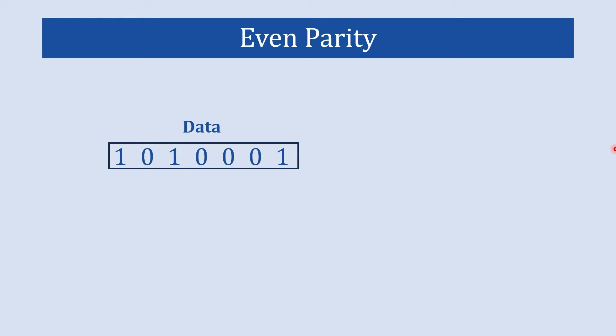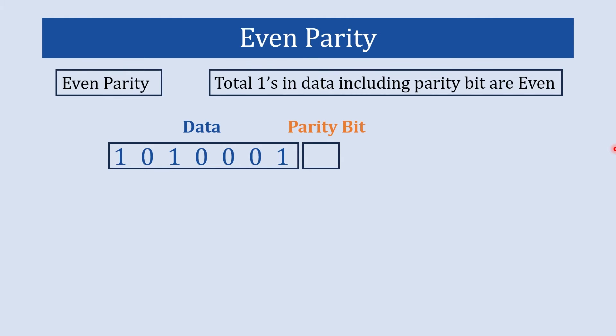Now let's understand even parity using the same data as in the odd parity example. The parity bit is kept blank for now. The definition of even parity: the total ones in data including the parity bit should be an even number. Here we have three ones in our data, which is an odd number. So to satisfy even parity, we add one as the parity bit — three plus one gives us four.